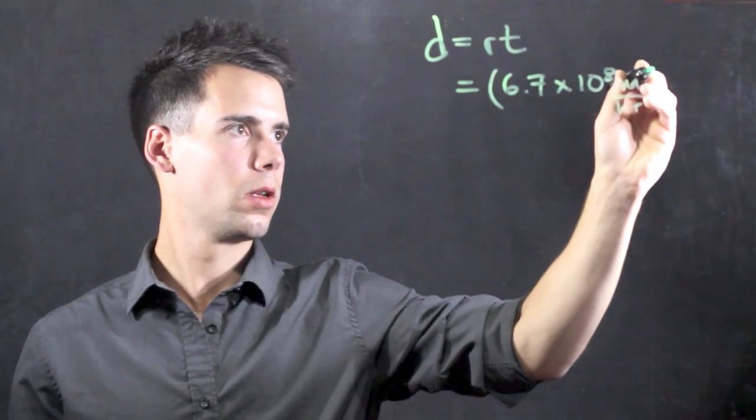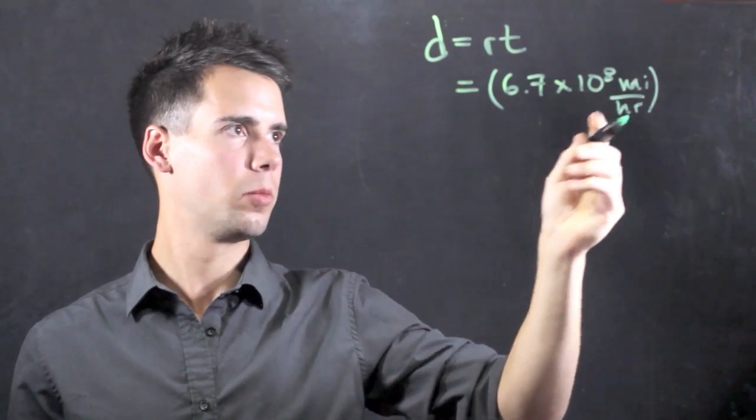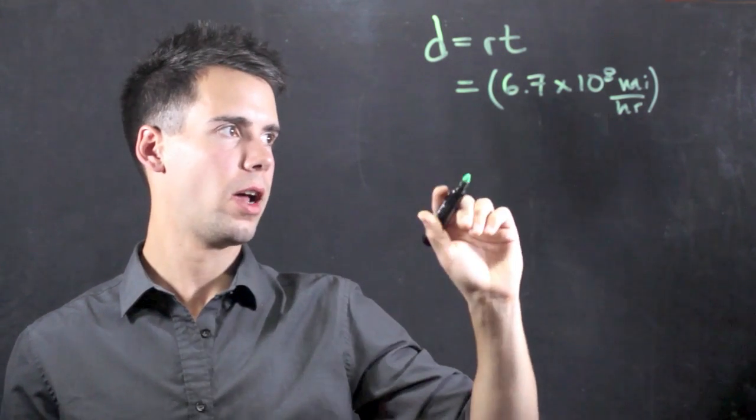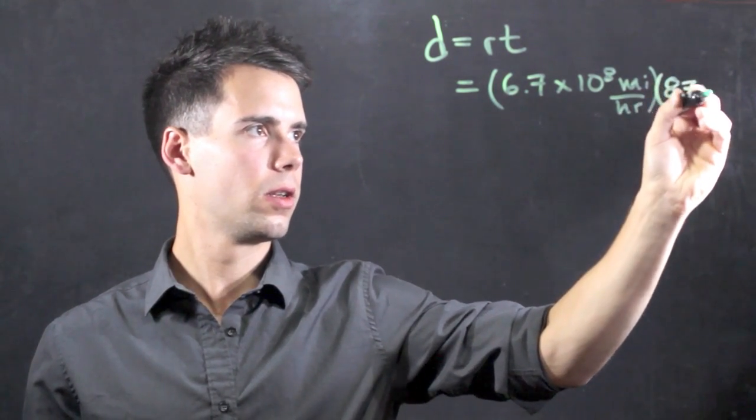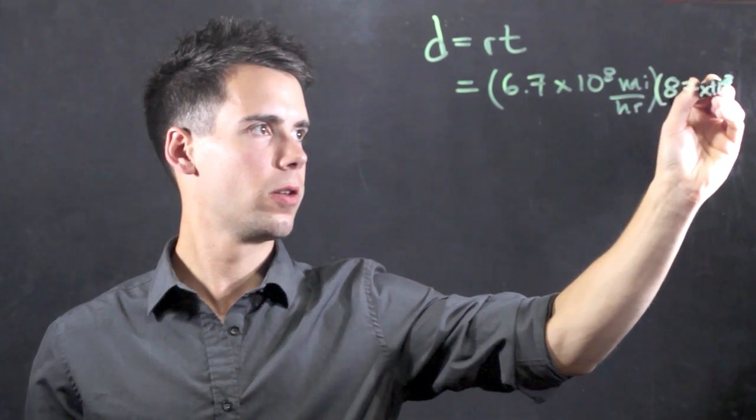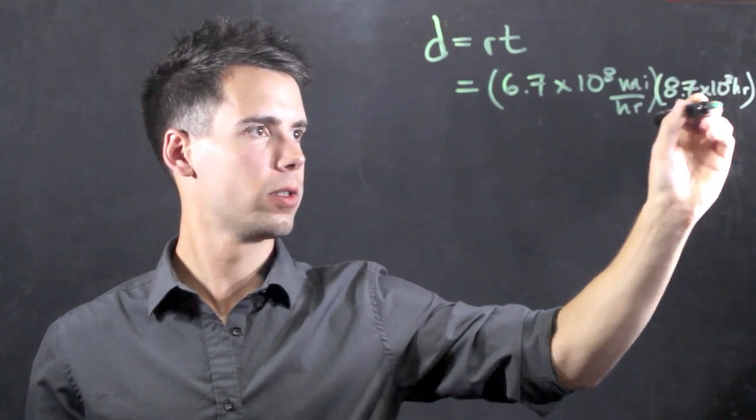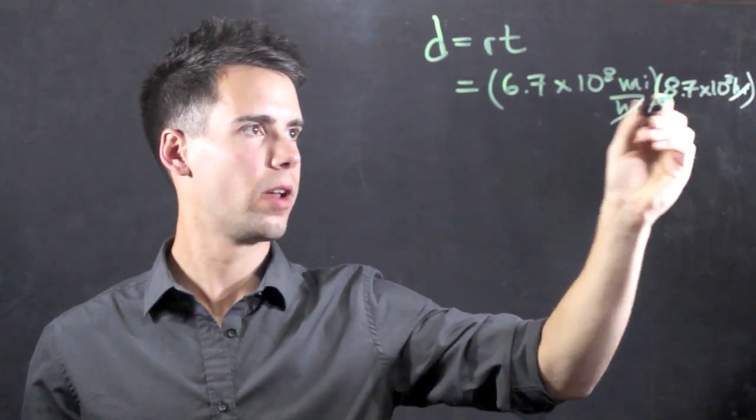And the time is simply one year but in hours it is 8.7 times 10 to the 3 hours. Conveniently hours cancel and we're left with miles.